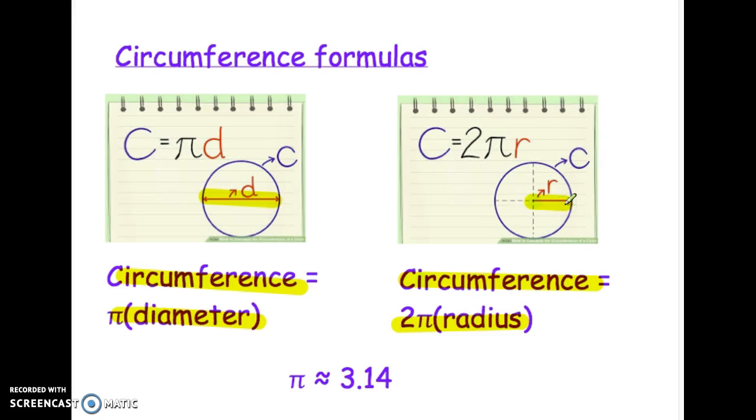You should notice that this works because 2 times the radius—the radius is the distance from the center of the circle to the edge—and if you put two radii together, then it makes the diameter. So you'll see that these formulas mean exactly the same thing, and you can use either one.